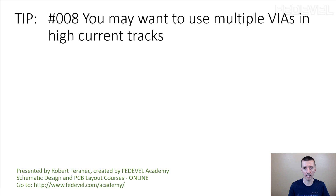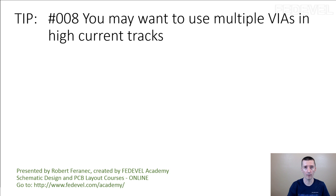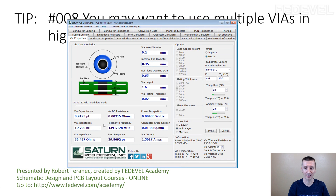Because one via can only carry some maximum current — there is a maximum current which can flow through one via. How do you calculate this maximum current? You can use a calculator, for example the Saturn PCB Toolkit, specifically the via properties section.